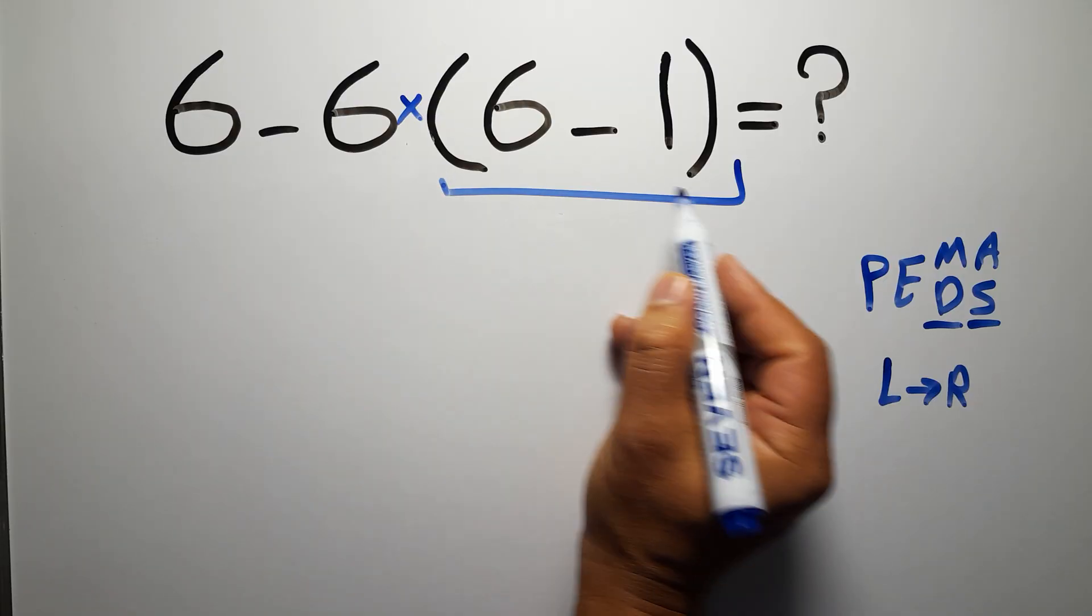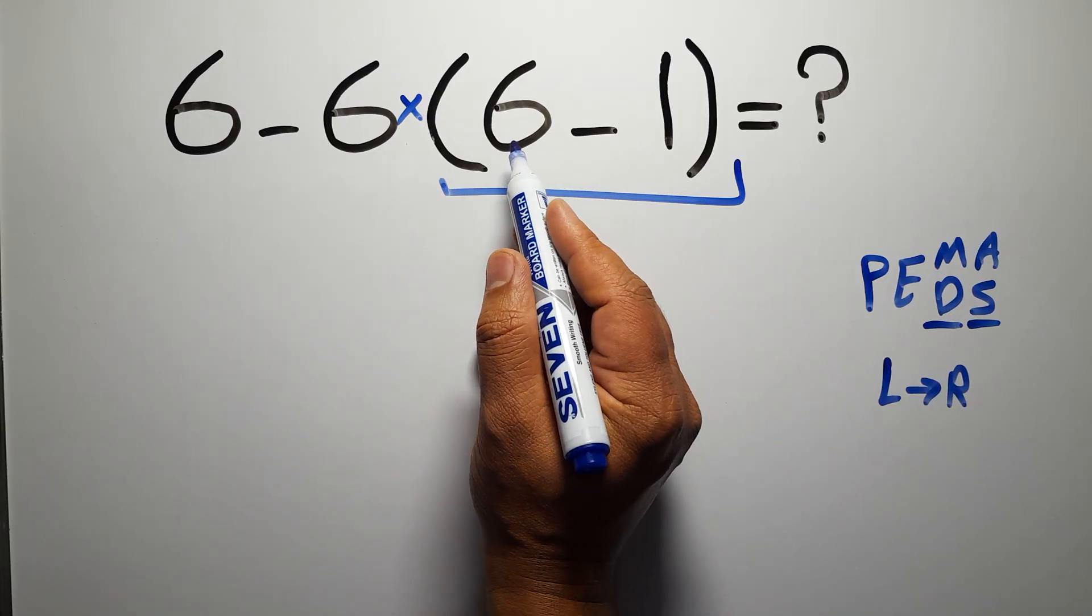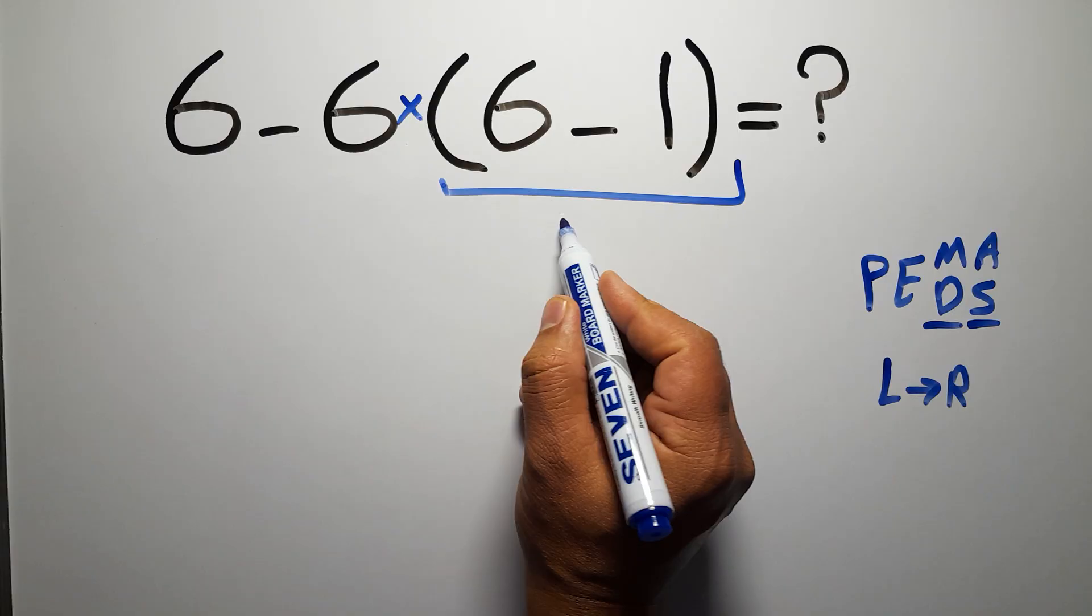So, first this parentheses. Inside these parentheses, we have 6 minus 1, which equals 5.